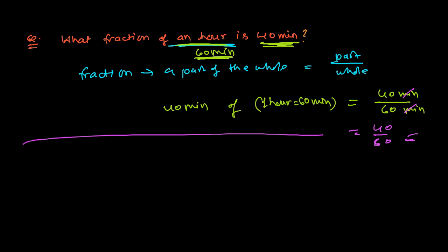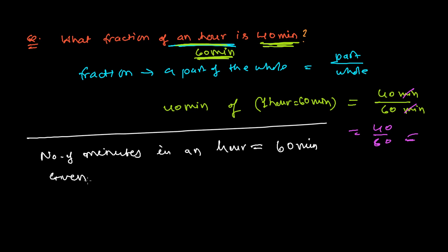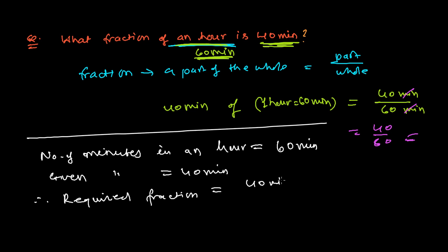We can also write this more formally. Number of minutes in an hour equals 60 minutes, and given minutes equals 40 minutes. Therefore, the required fraction is given minutes over total minutes — that is 40 over 60.